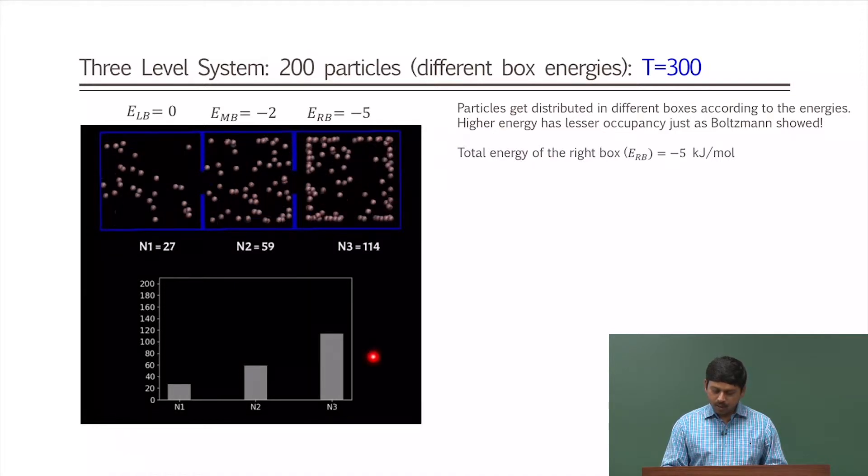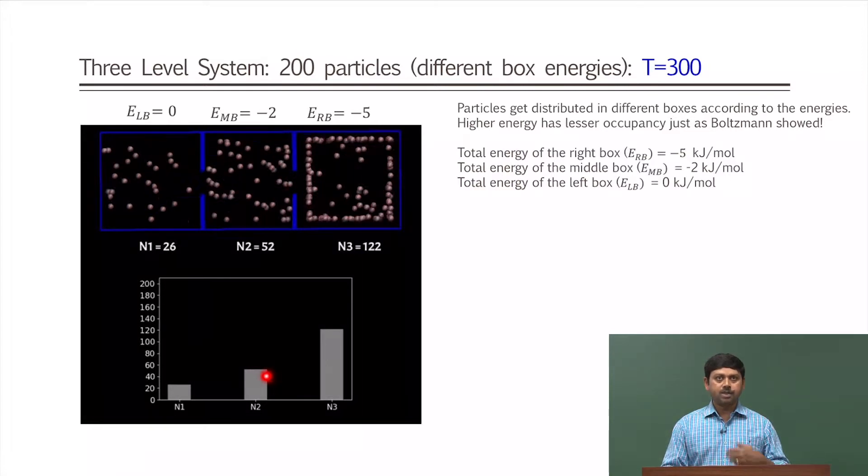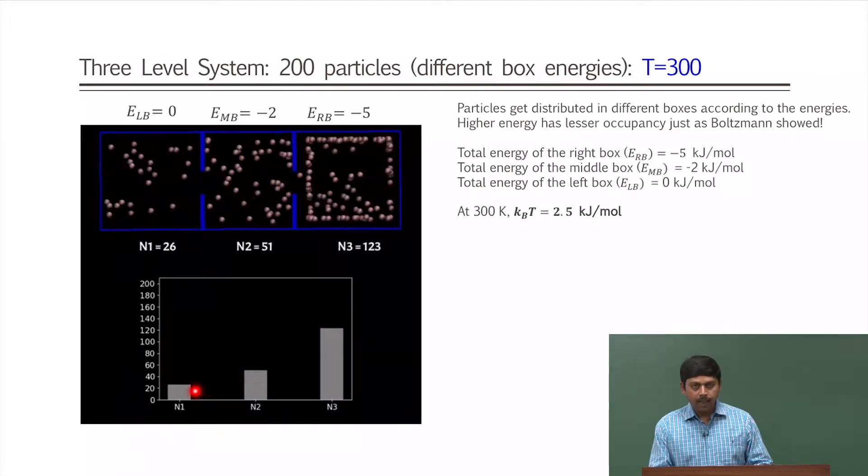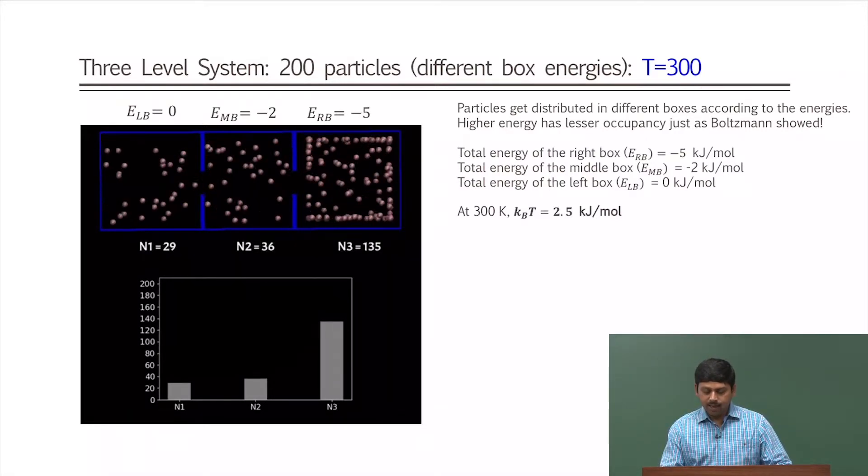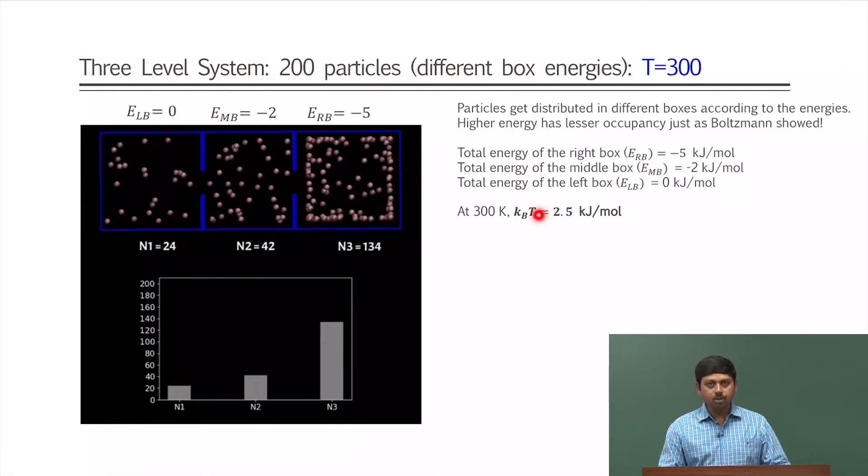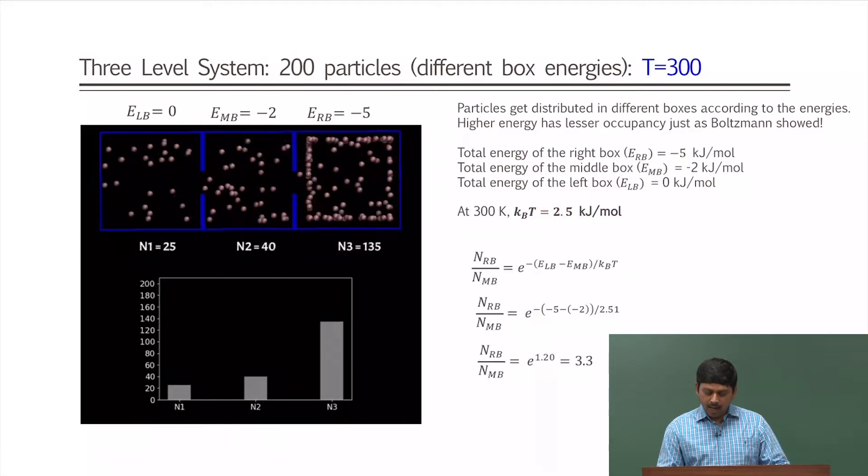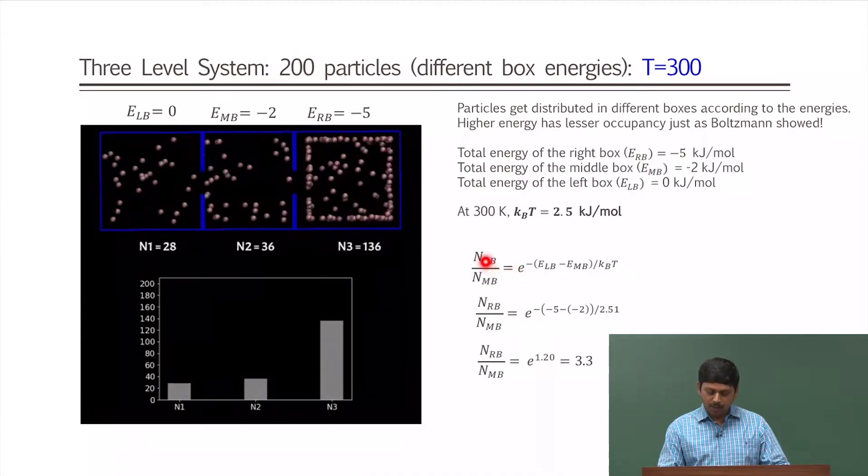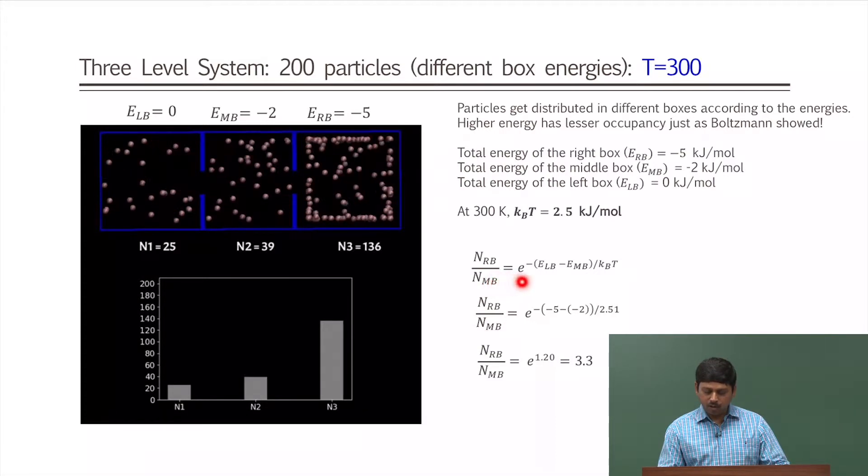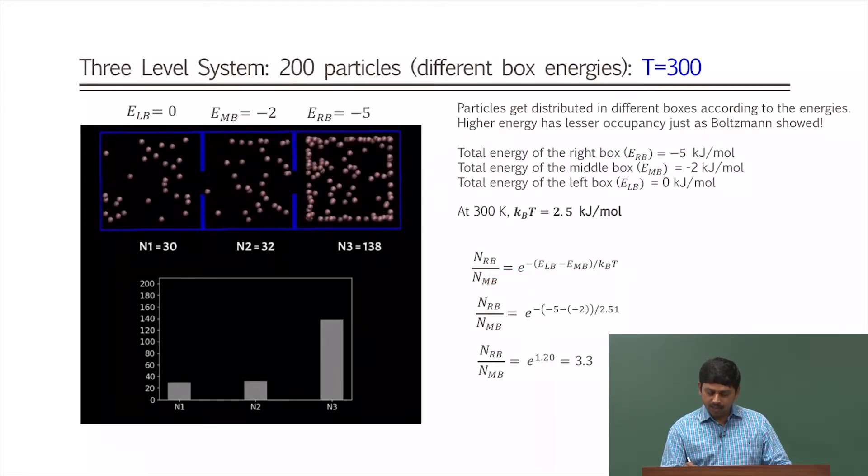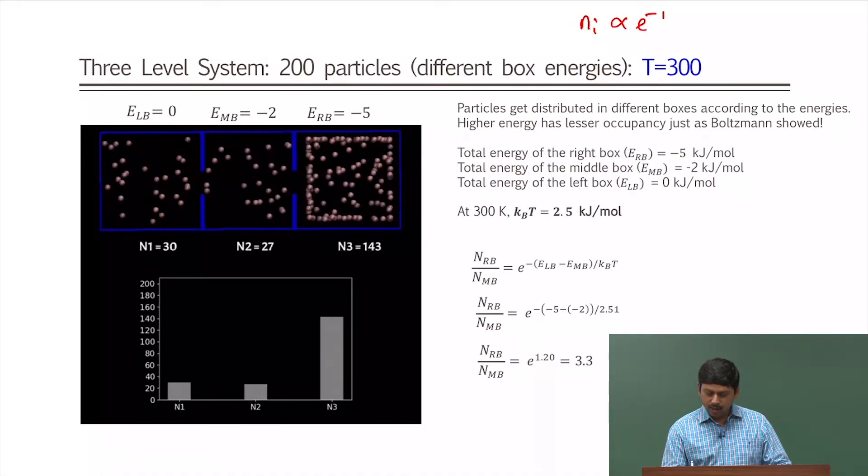As you mentioned, three different boxes have three different values of energy, that means the particles face different energy values. The temperature is kept at 300 Kelvin, which is very important. At 300 Kelvin, the k_B T value—k_B is Boltzmann constant—k_B T for 1 mole comes to be around 2.5 kilojoule. When you calculate now using Boltzmann distribution, the number of particles in the right box divided by number of particles in the left box, you get this because let's say your N_i is proportional to e^(-E_i/k_B T).